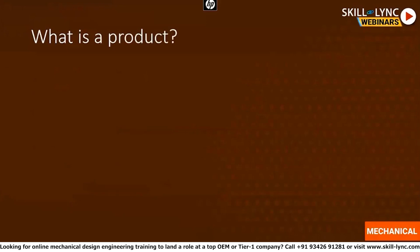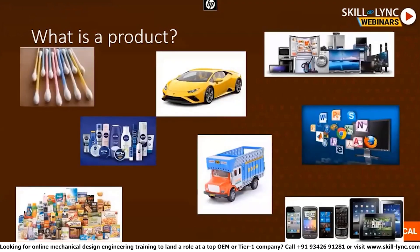First of all, what is the product? The product can be anything — starting from a small cotton bud, food, potato chips, or whatever it may be, to big objects like a car or a truck. Things which are produced for the consumption and utilization of the public, we call it a product.